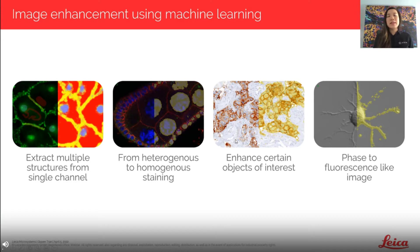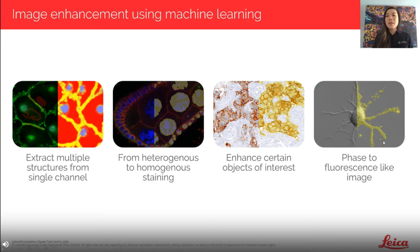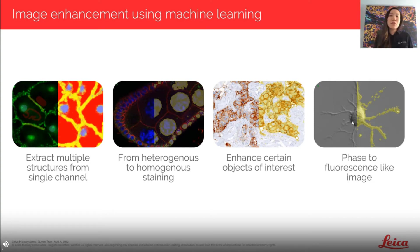My third example is enhancing certain objects of interest in your images. In this histology image, we use the pixel classifier to pull out regions and cells with a specific stain, depicted in yellow, separating them from the background. My fourth example is going from a phase to a fluorescent-like image — we taught the pixel classifier to detect a neuron, both the soma and the dendrites, creating a fluorescent-like image with high signal for the neuron versus low signal for all other background components, making subsequent image analysis much easier.